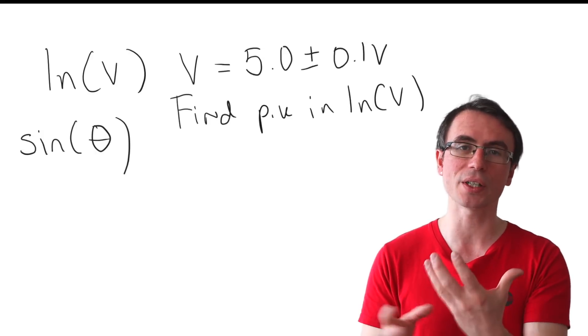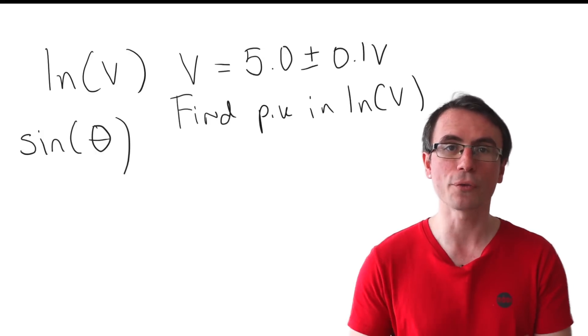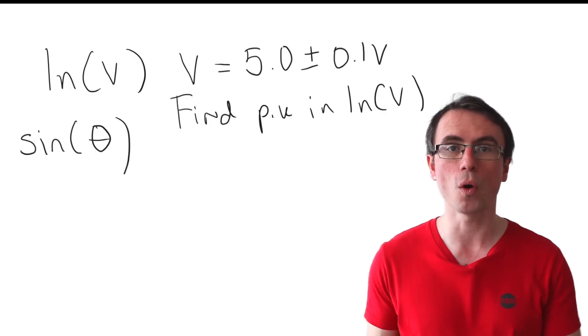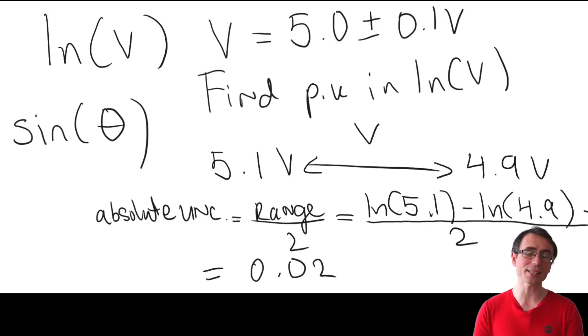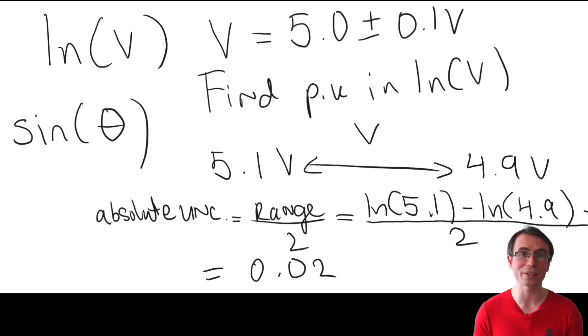Occasionally we may need to find the uncertainty in a non-standard function, for instance ln of a quantity or the sine of an angle. And if that's the case, we also need to use the fact that the absolute uncertainty is equal to the range over 2. For instance, if we had to find the uncertainty in the natural log of some voltage, we could find the maximum possible value the voltage could be, take away the minimum possible value that the voltage could be, ln of all of these quantities, divided by 2. And this represents half of the range of the function, which will be the absolute uncertainty.